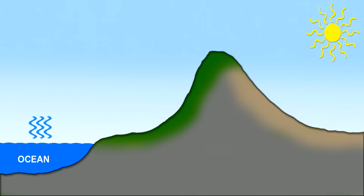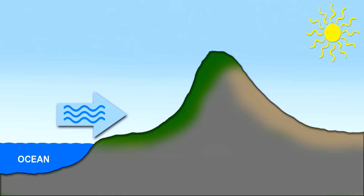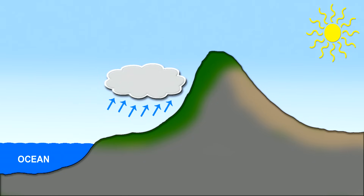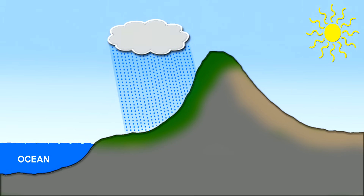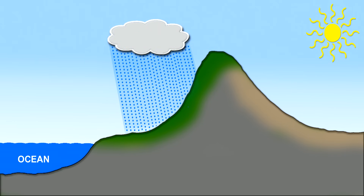Here's how it works. Evaporation on the surface of the ocean creates moist air. Prevailing winds push the wet air inland until it hits the base of the mountains. The air is forced to rise, and as the air lifts, it expands and cools. Cooler air can't hold as much moisture, so clouds form and it rains a bunch, resulting in a lush, green landscape.